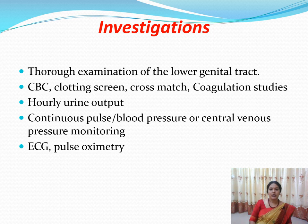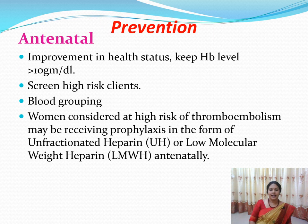Diagnostic investigations include a thorough examination of the lower genital tract to exclude tears or other bleeding sources, complete blood count, clotting time, blood for cross-matching, and coagulation studies to identify any clotting disorders. Urinary output, pulse, and blood pressure should be monitored every four hours. Central venous pressure monitoring, ECG, and pulse oximetry should also be performed.